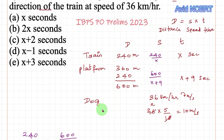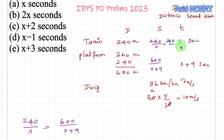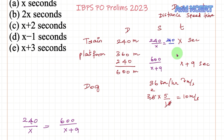Since we found x equals 6, we can substitute to find the speed of the train. Speed equals 240 divided by x, which is 240 divided by 6, giving us 40 meters per second as the speed of the train.